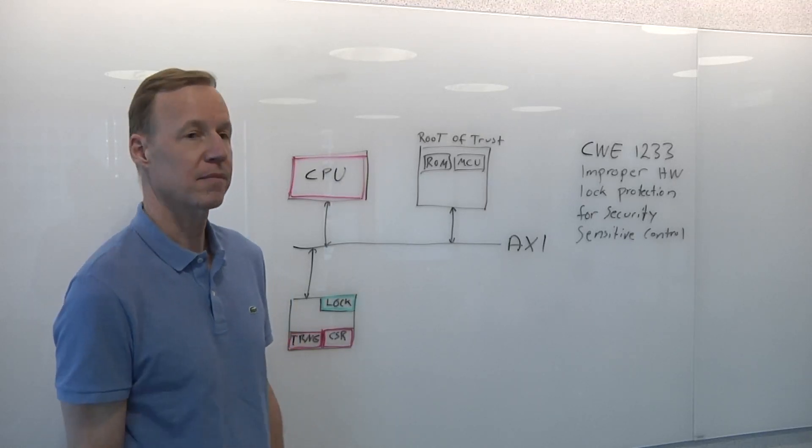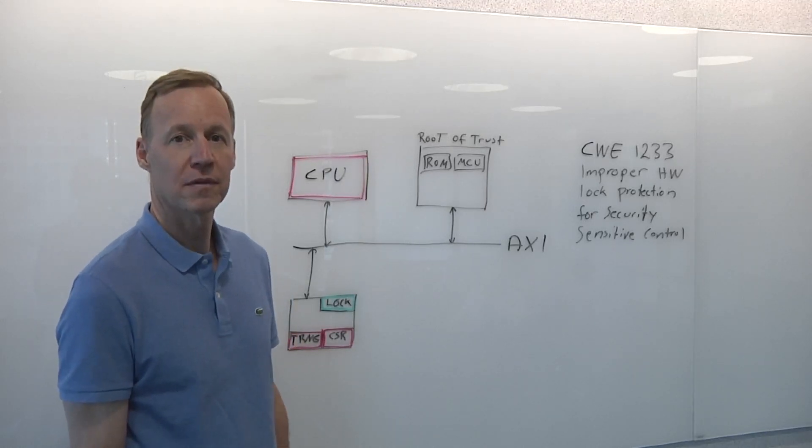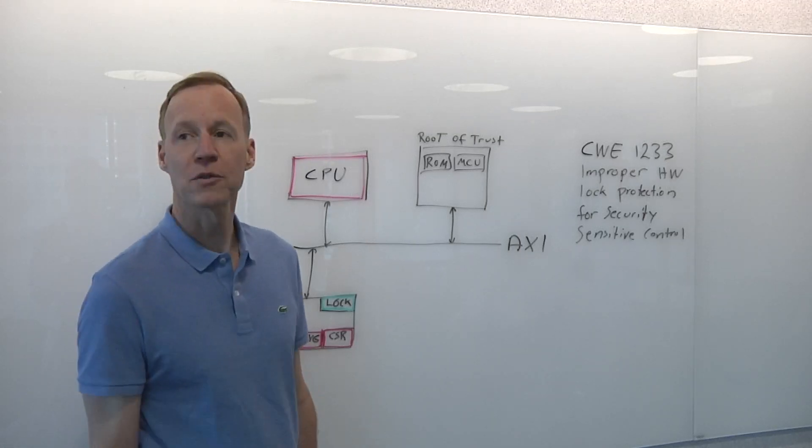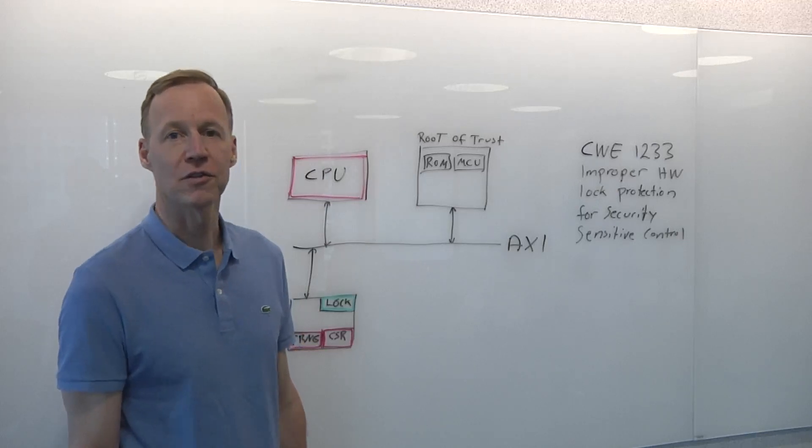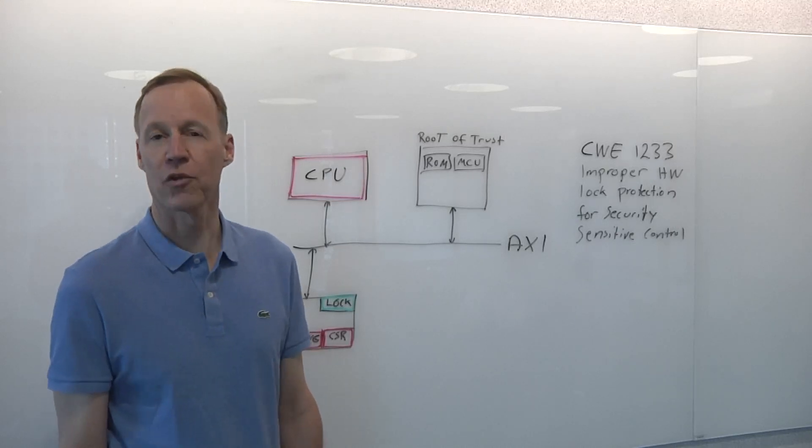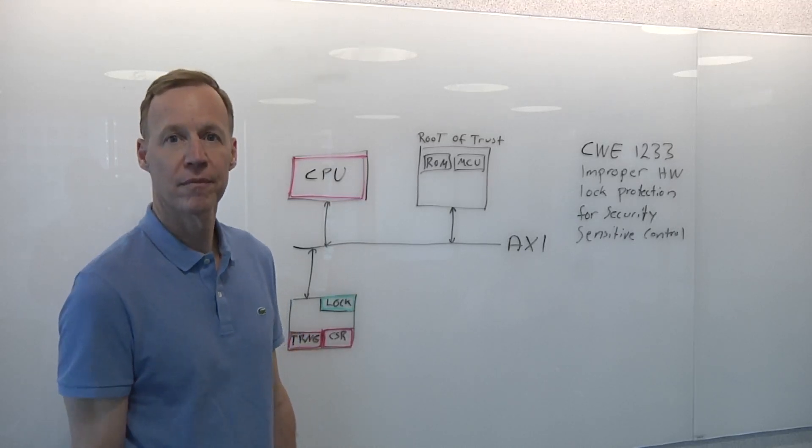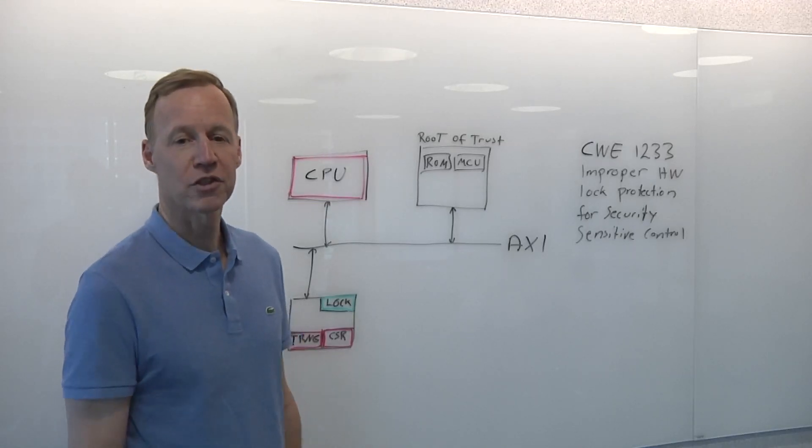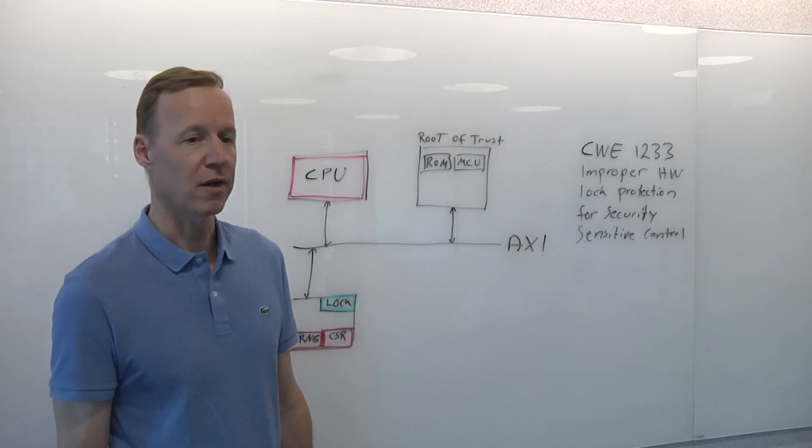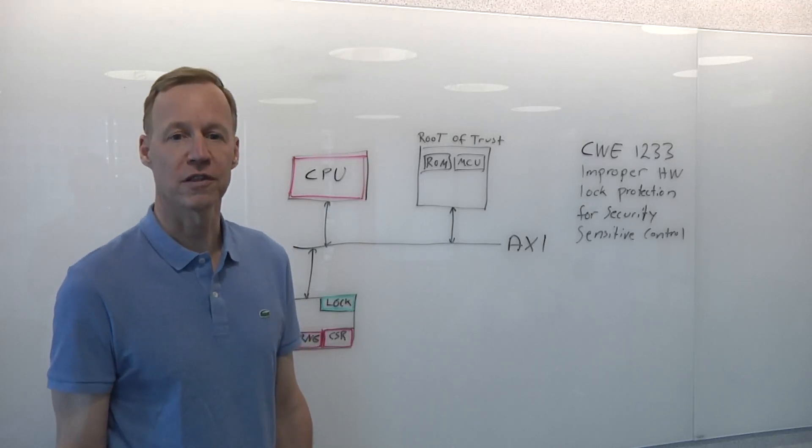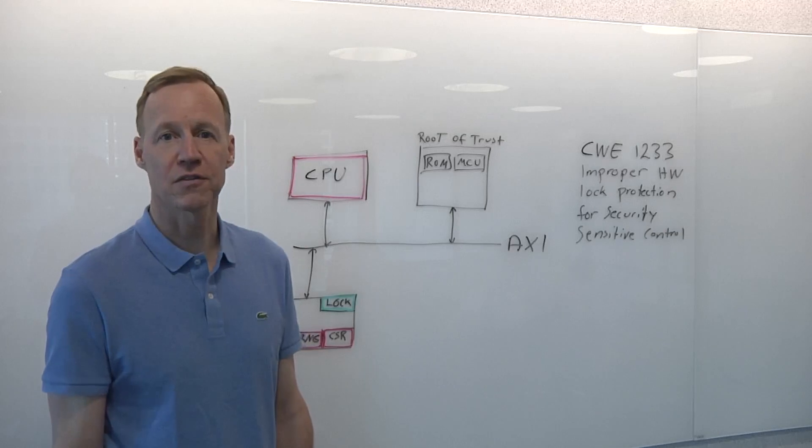And CWE stands for Common Weakness Enumeration, right? And there's hundreds of these or thousands of them? Yeah, there are about 100 of them that are relevant to hardware. And they're grouped so that you could easily identify what's applicable to your system. How new is that database of those weaknesses? The software version of the Weakness Database has been around since about 2006. But the hardware weakness version was introduced in 2020.